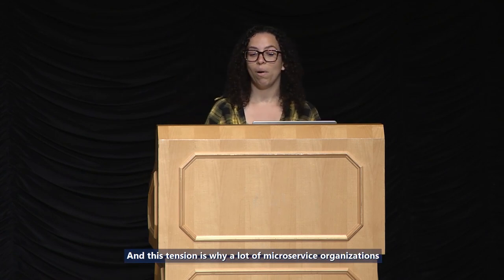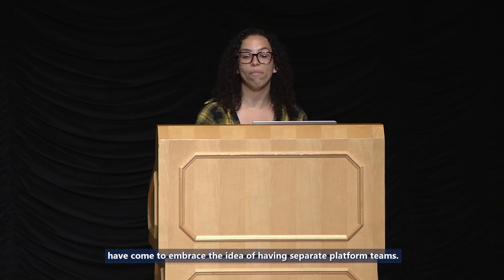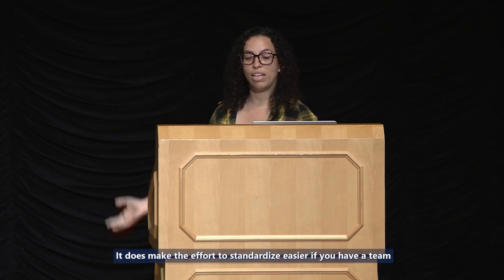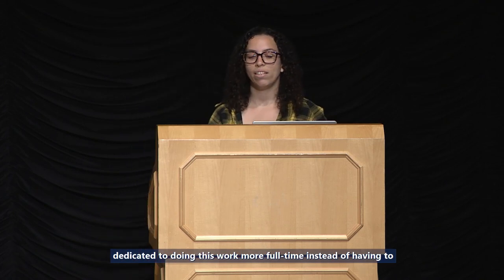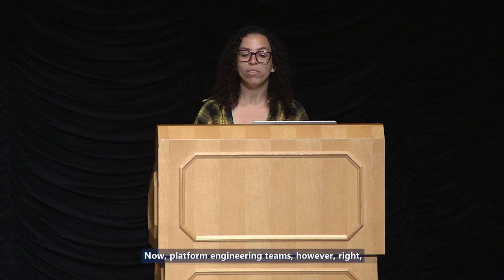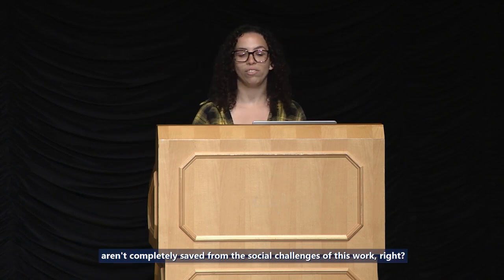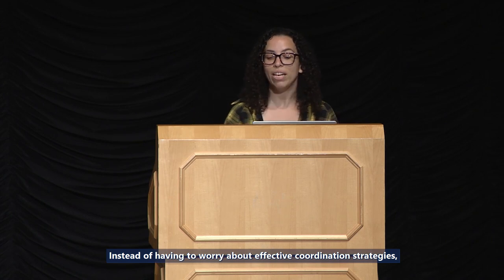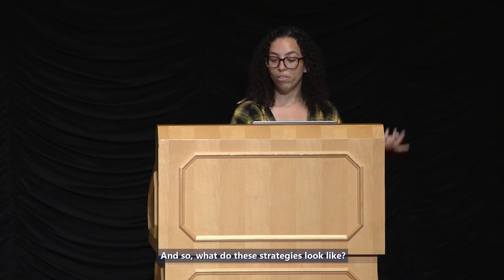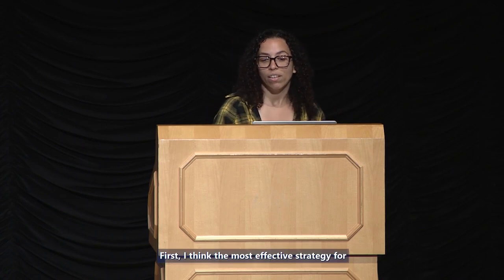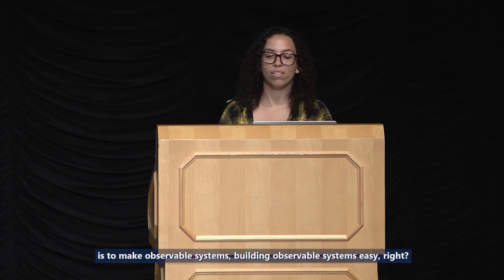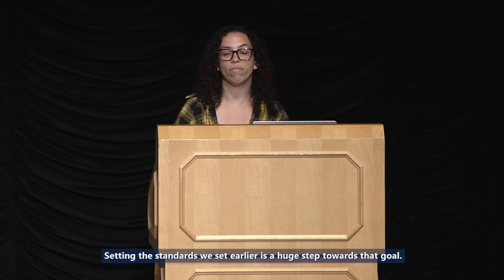This tension is why a lot of microservice organizations have come to embrace the idea of having separate platform teams. This pattern makes the effort to standardize easier if you have a team dedicated to doing this work full-time, instead of coordinating efforts across multiple teams. Platform engineering teams, however, aren't completely saved from the social challenges of this work — instead of worrying about coordination strategies, we have to worry about effective support and adoption strategies. The most effective strategy for enabling engineers to observe systems is to make building observable systems easy.